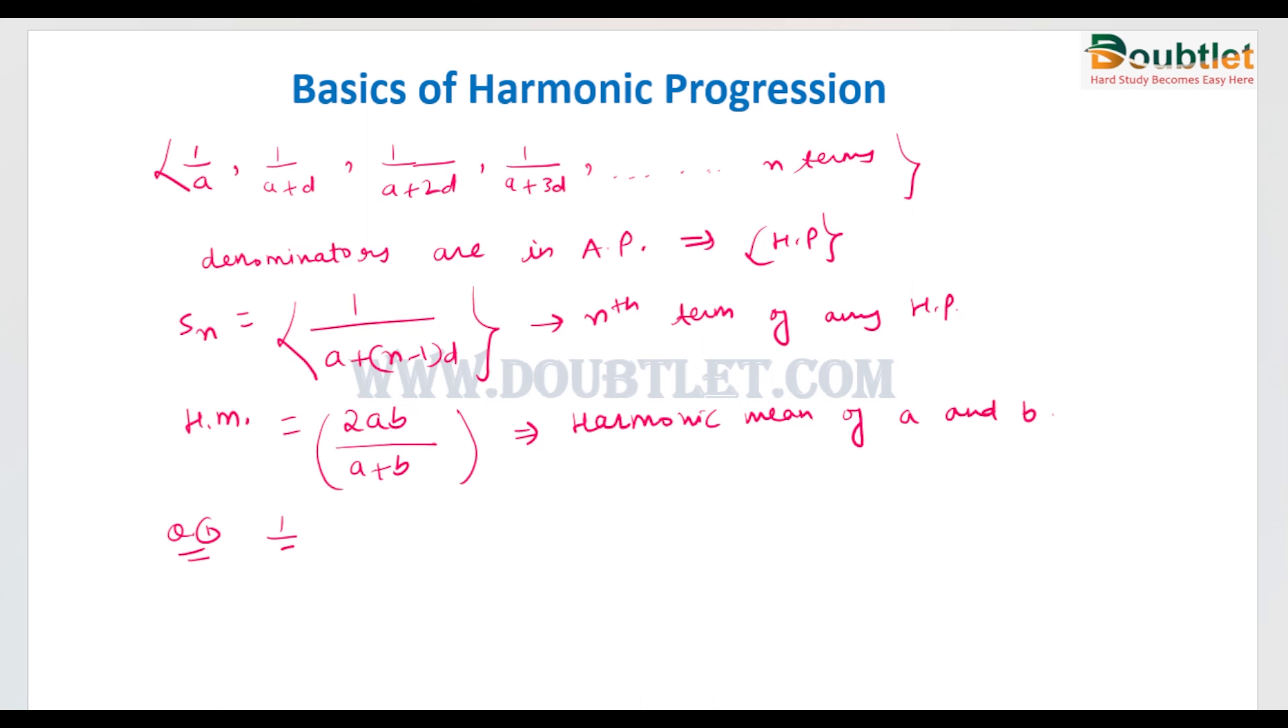Suppose there is a series that is 1 upon 5, 1 divided by 10, 1 divided by 15, and so on. First of all we will check whether the denominators are in AP or not. Like 5, 10, 15 means they are at a common difference of 5, so denominators are in AP. We can say that this series is in harmonic progression.